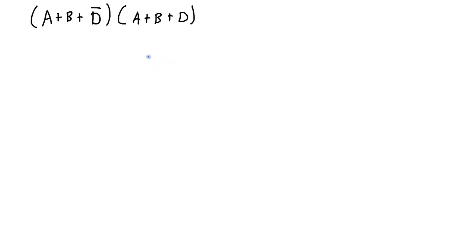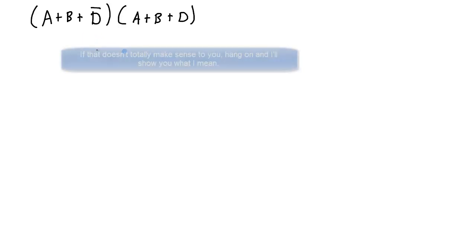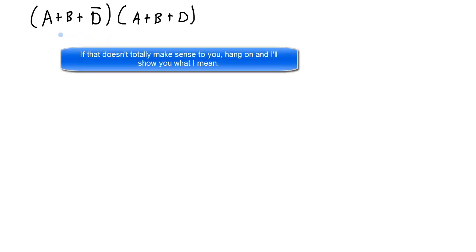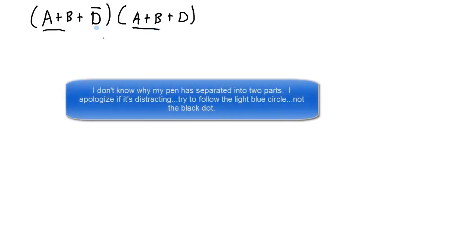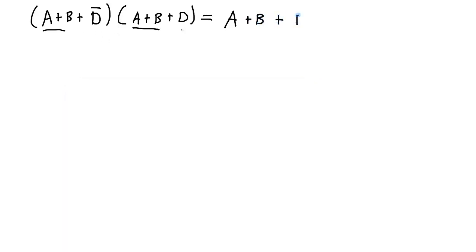Now I want to show you something that's a little less easy to follow. In this particular example, I could expand this whole expression out and then do simplification — this is in the product of sums form. What I can do is look for factors that are common and then factors that are inverses of each other in the two different sum parts of the expression. The factors in common are a OR b, and then I have NOT d in this sum expression and d in this sum expression. So this equals a OR b — the common part — ORed with NOT d ANDed with d. NOT d ANDed with d will simply be 0, so the result will simply be a OR b.